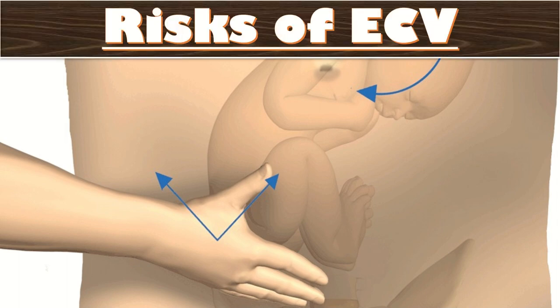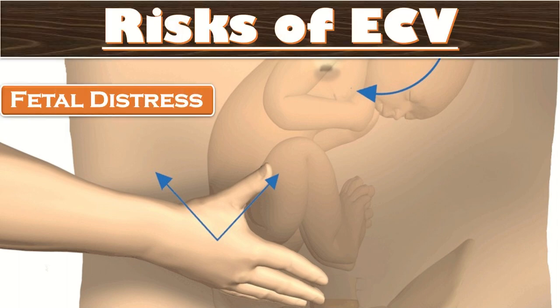What are the risks of external kephalic version? First, fetal distress — transient bradycardia occurs in about 5% of cases, lasting less than three minutes. In that case, we place the patient in the left lateral position with continuous CTG monitoring. If bradycardia persists for more than six minutes, we proceed to category one cesarean section. In total, we can wait up to nine minutes before delivery by cesarean section should occur.